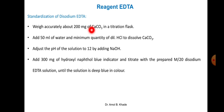For complexometric titration, calcium carbonate (CaCO₃) is used as the primary standard. We weigh accurately about 200 mg of calcium carbonate, add 50 mL of water and a minimum quantity of dilute HCl to dissolve it — since it is not freely soluble in water. Then we adjust the pH of the solution with sodium hydroxide solution to pH 12, which is a slightly alkaline pH.